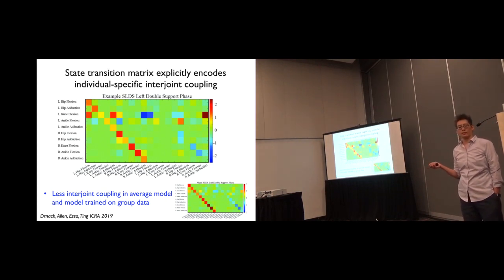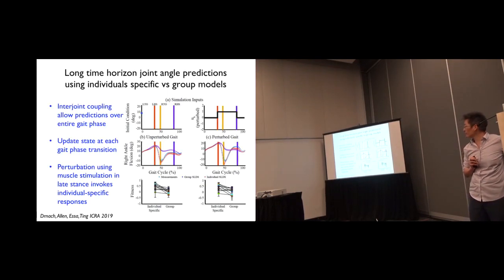And so we've described this coordination pattern between the two limbs, and it turns out that these patterns are individual specific. And we can perturb them. So if you look at the group data, you see a much stronger diagonal suggesting that these kinematics are independent, but in fact, each person has their own specific coupling matrix that might tell us something about how they learn to walk, or what kind of motor impairment they have.